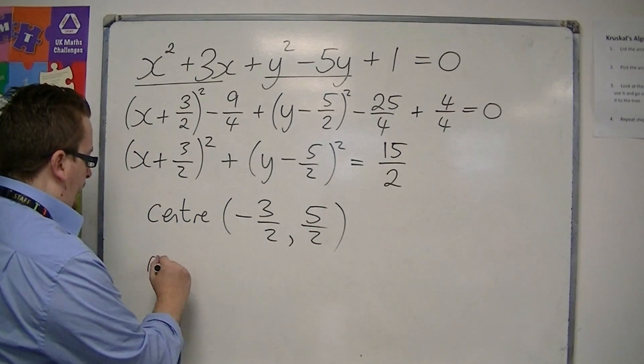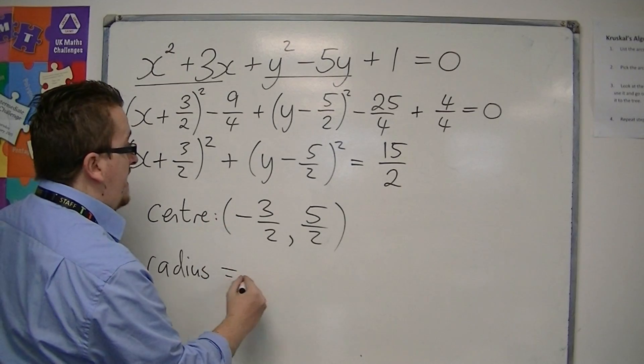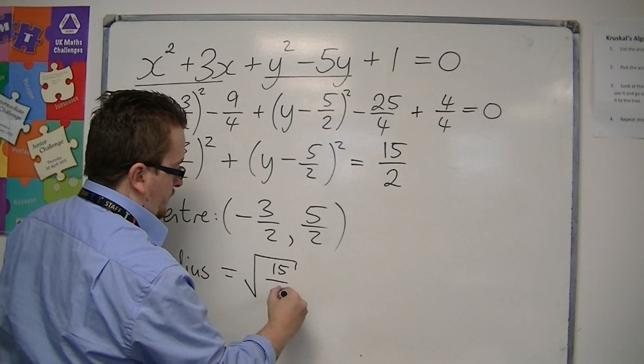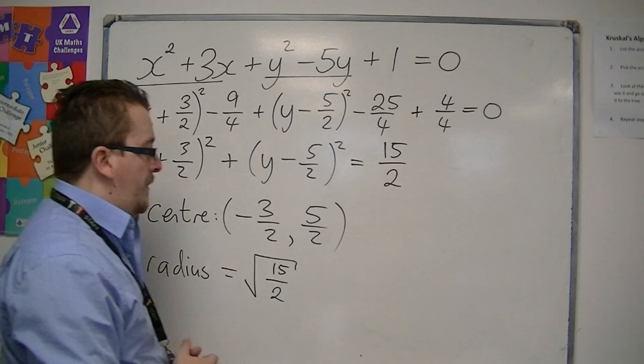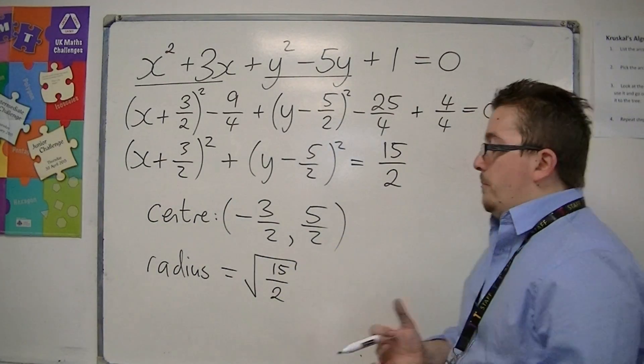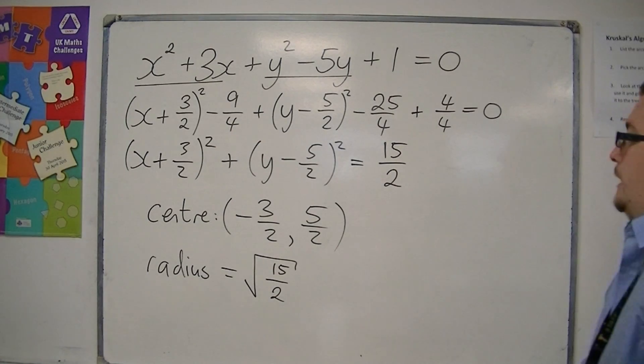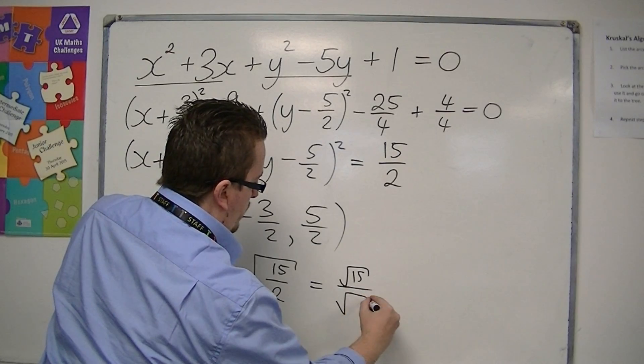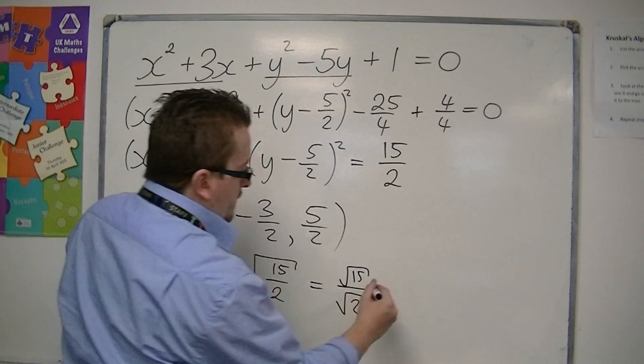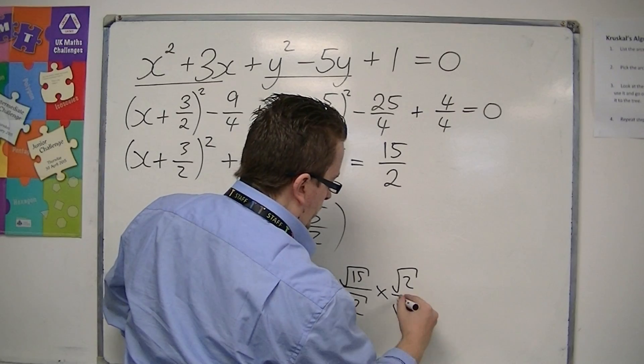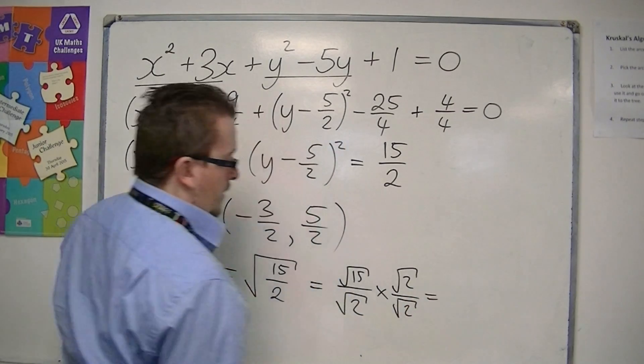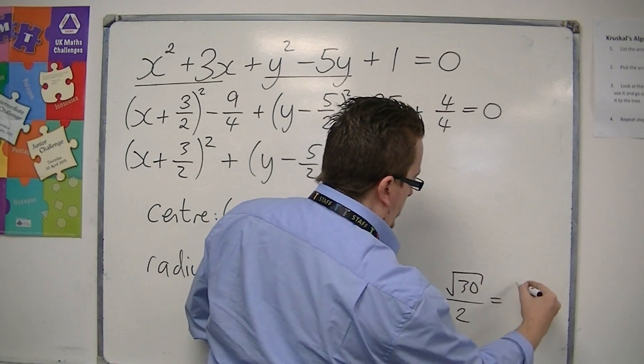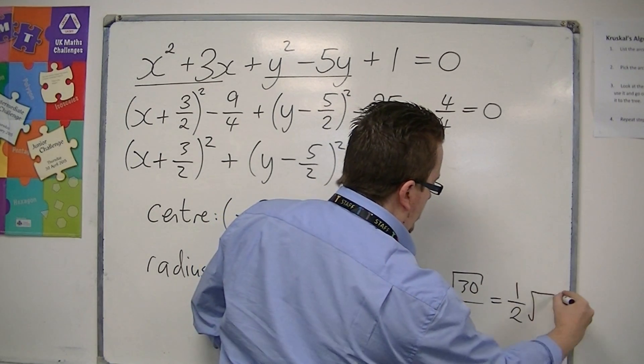And the radius is equal to the square root of 15 over 2. So the square root of 15 over 2, which you could simplify if you like. Let's say that's square root of 15 over the square root of 2. And so I can multiply top and bottom by root 2. So I'm going to get root 30 on the top, 2 on the bottom. So I could just write that as 1 half root 30, if I like.